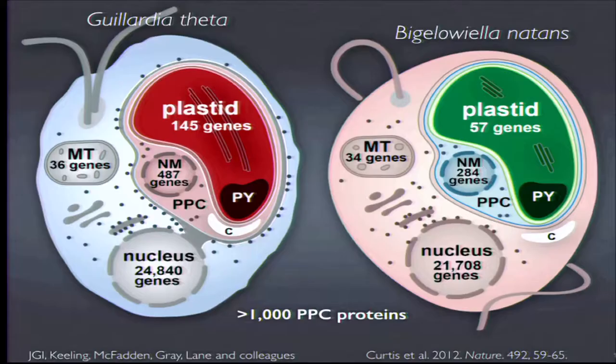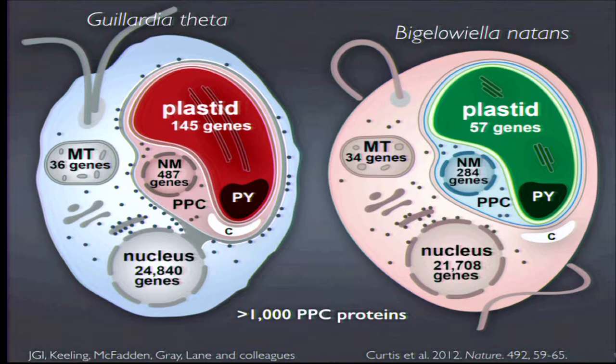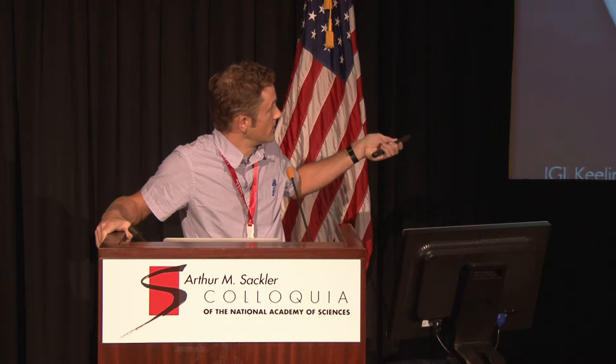We were inspired by these questions to sequence the nuclear genomes of a model cryptophyte and a model chlorarachniophyte — work from my group, the Keeling lab, Jeff McFadden's lab, the Gray lab, and other groups worldwide. This characterized more than 20,000 genes encoded in the nuclear genomes. We found more than 1,000 — in the case of the cryptophyte Guillardia, more than 2,000 — proteins predicted to be encoded in the nucleus but targeted to the PPC compartment.